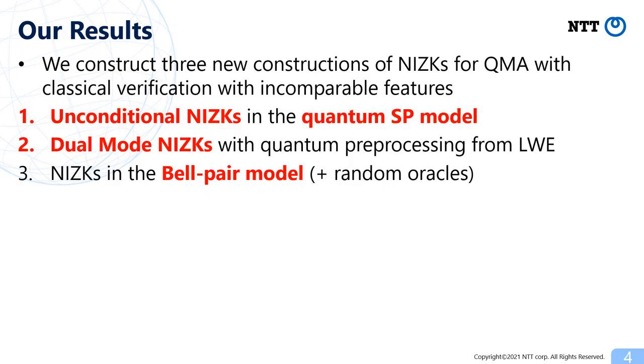In this work, we give three constructions of classically verifiable NIZKs for QMA with incomparable features. I will explain them one by one.